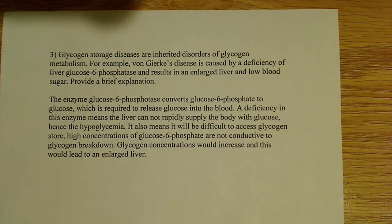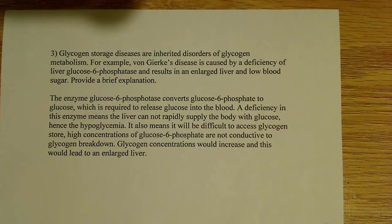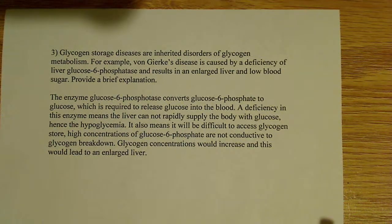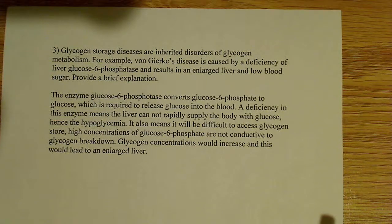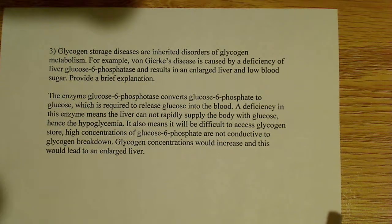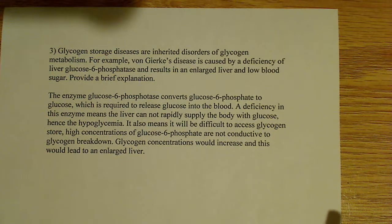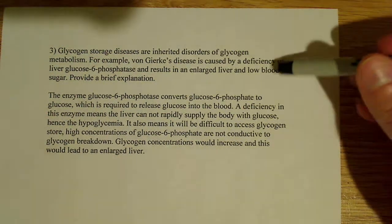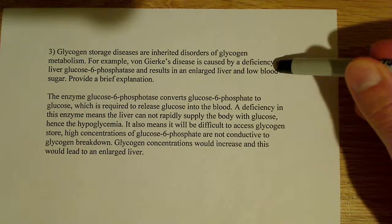A deficiency in this enzyme means the liver cannot rapidly supply the body with glucose. A rapid supply of glucose is essential, and our body has mechanisms designed to allow us to do that. In this case, gluconeogenesis and the final step that actually releases the glucose into the blood is not operating efficiently, which is going to result in hypoglycemia — accounting for the low blood sugar.